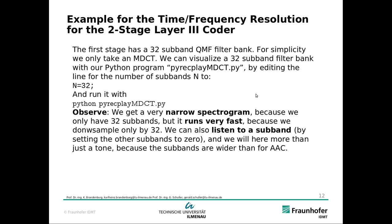We saw that the first stage has 32 subband QMFs — the PQMF filter bank. For simplicity, we take an MDCT and we can visualize a 32 subband filter bank with our Python program pyregplaymdct.py by editing the line for the number of subbands n to n equals 32 and running it with this command. We will see a very narrow spectrum because we only have 32 subbands, but it runs very fast because we downsample only by a factor of 32. We can also listen to a subband by setting the other subbands to zero, and we will hear more than just the tone because the subbands are wider than for AAC.